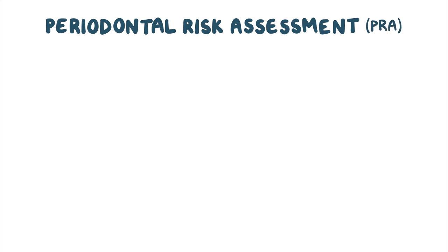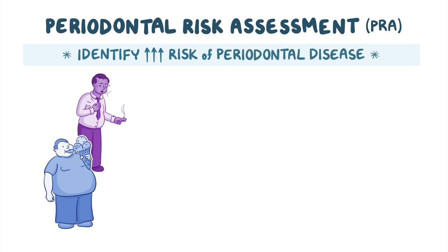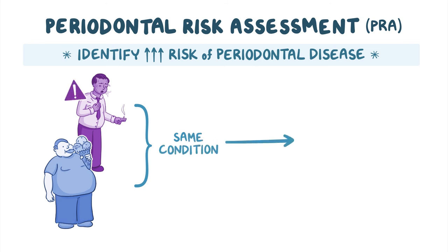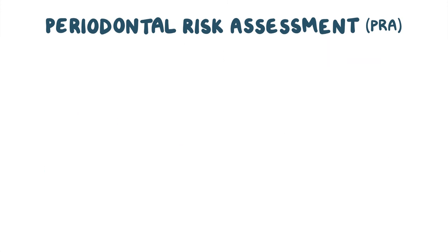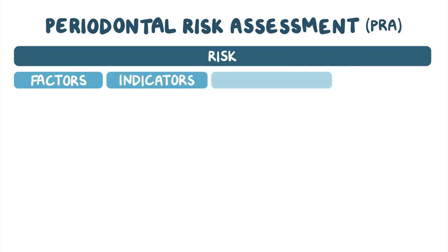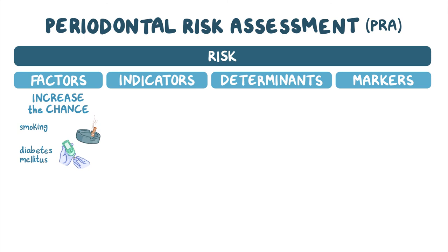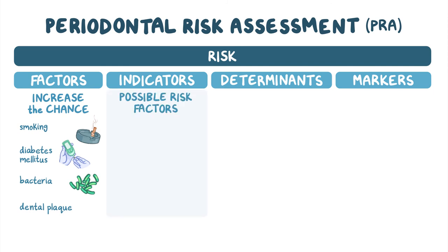The periodontal risk assessment, or PRA, aims to identify individuals who are more likely to develop periodontal disease. Even if two individuals have the same periodontal condition, those with higher risk may require different case management. PRA covers four categories: risk factors, risk indicators, risk determinants, and risk markers. Risk factors increase the chance of developing periodontitis and include tobacco smoking, diabetes mellitus, pathogenic bacteria, and accumulation of dental plaque.